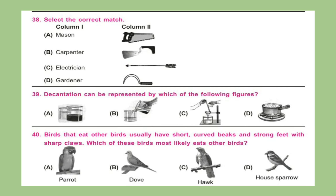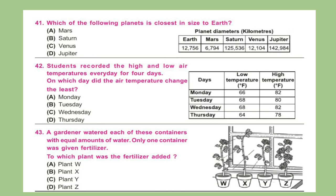Question 40: Birds that eat other birds usually have short curved beaks and strong feet with sharp claws. Which of these birds most likely eats other birds? Question 41: Which of the following planets is closest in size to Earth? Question 42: Students recorded the high and low air temperatures every day for 4 days. On which day did the air temperature change the least?